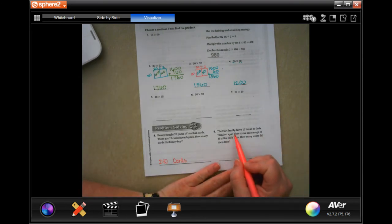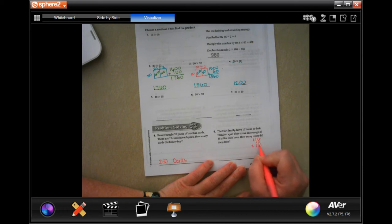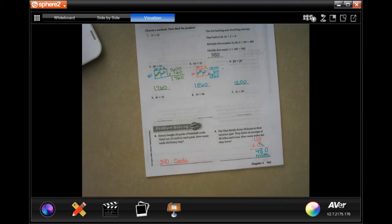The Hart family drove 10 hours to their vacation spot. They drove an average of 48 miles each hour. How many miles did they drive? So we're actually 48 miles for each of 10 hours. So I like multiplying the zeros on the end because I can do that. And then 1 times 48 is 48. So 480 miles.